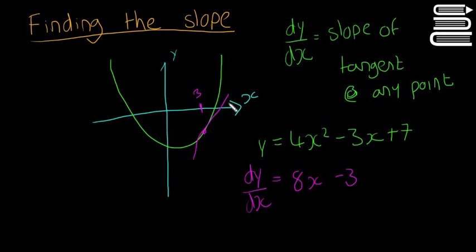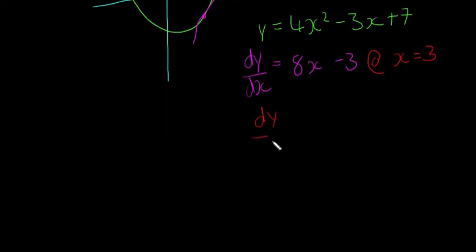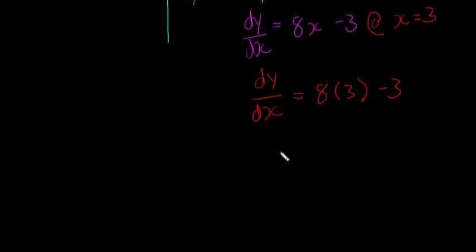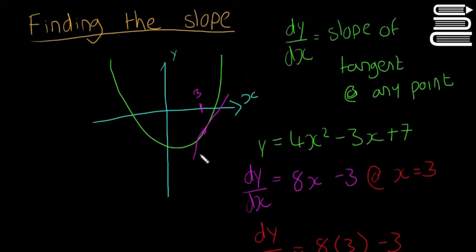This gives us the slope at any point, but they're asking us for at x equals 3. So at x equals 3, then our dy/dx is going to be equal to 8 multiplied by 3 minus 3. You just sub in your x into your dy/dx here. So anytime we have x you put in 3. So then our dy/dx will be equal to 24 minus 3, which is equal to 21.